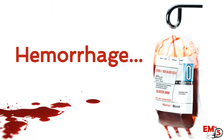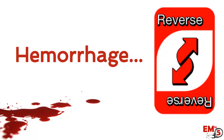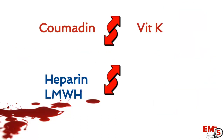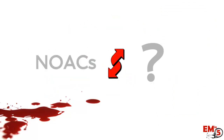In any patient who's on anticoagulants, we have to think about what's going to happen if the patient has a life-threatening hemorrhage, or maybe they have to undergo emergent surgery or a procedure. We have to have some way to reverse what we've done to them. With coumadin, that option is vitamin K, and for heparin we can give protamine. So let's talk about what our options are for the NOACs.